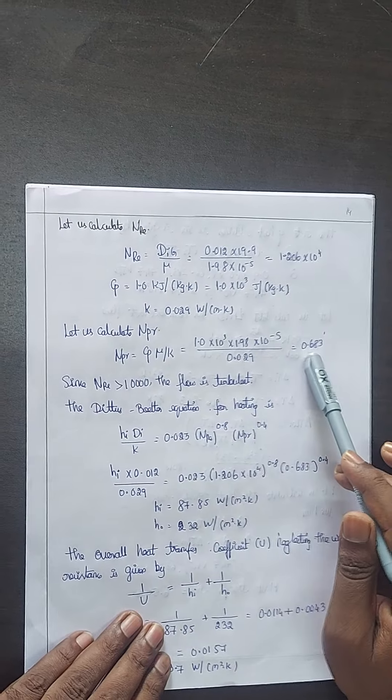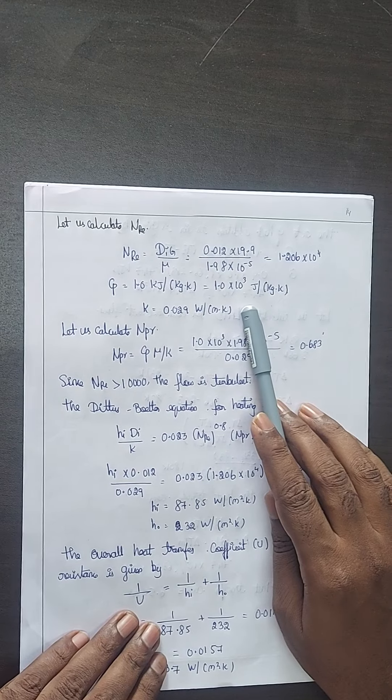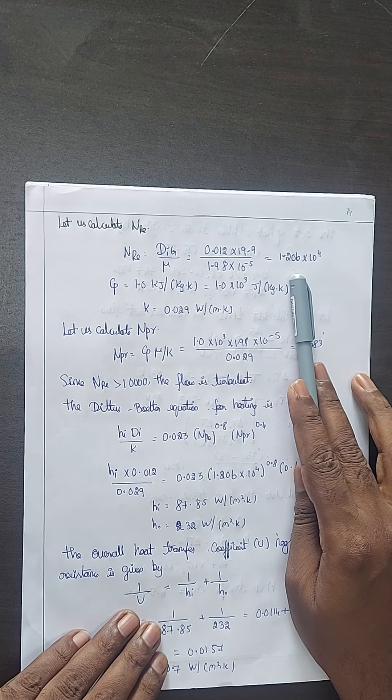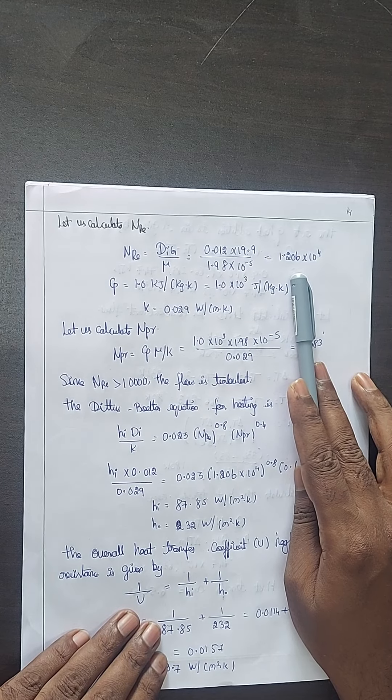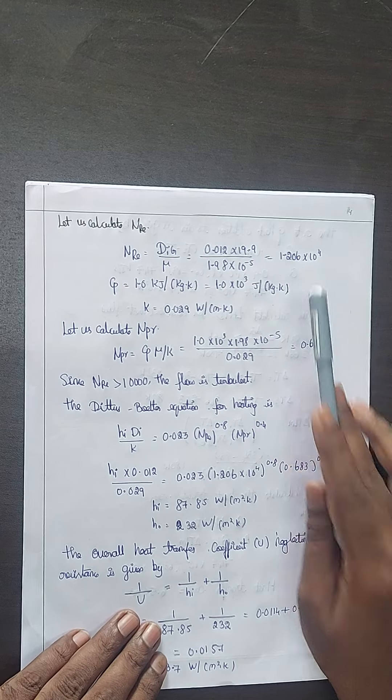cp mu by k. Reynolds number is 1.2 million something. It will be a turbulent flow.